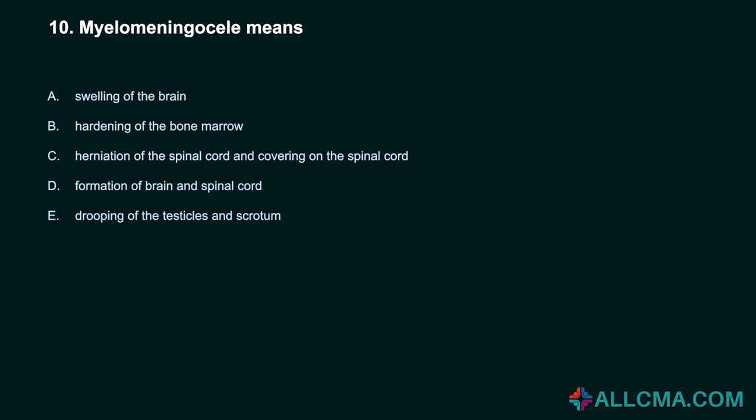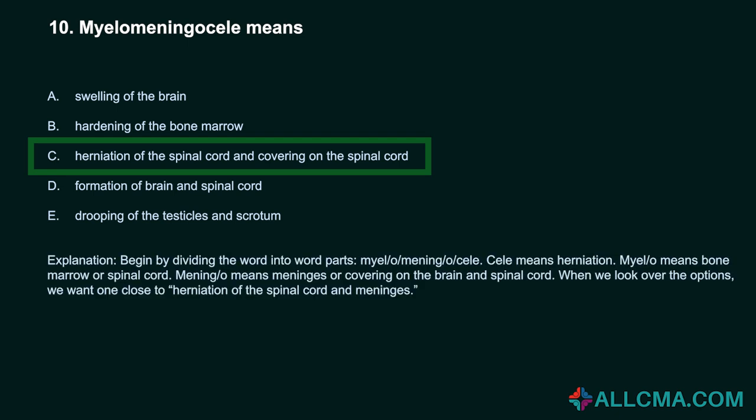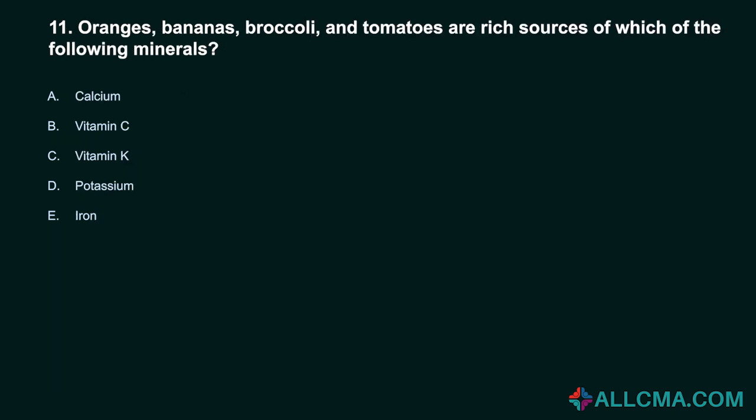Question 10: Myelomeningocele means: a) swelling of the brain, b) hardening of the bone marrow, c) herniation of the spinal cord and covering on the spinal cord, d) formation of brain and spinal cord, e) drooping of the testicles and scrotum. Correct answer: C, herniation of the spinal cord and covering on the spinal cord. Dividing the word: myel/o means bone marrow or spinal cord, mening means covering on the brain and spinal cord, and -cele means herniation.